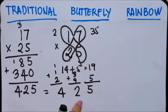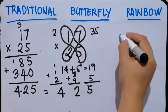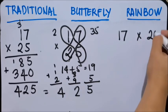Okay, same. Next, the rainbow technique. Again, 17 times 25.